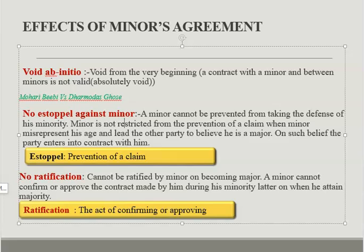The next effect is no estoppel against a minor. Estoppel means prevention of a claim. A minor cannot be prevented from taking the defense of his minority. Even if a minor misrepresents his age and leads the other party to believe he is a major, the doctrine of estoppel is not applicable against the minor.